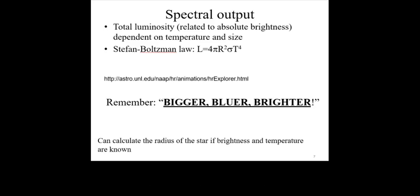In turn, between two stars of the same brightness, the cooler one must be larger to compensate for its lesser per area output.